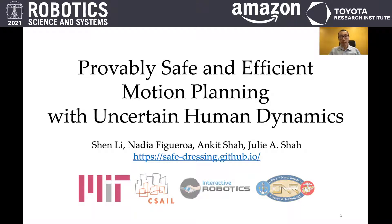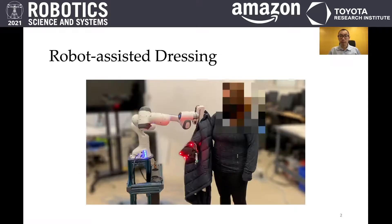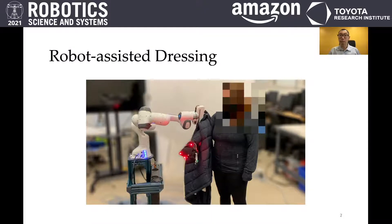Hello everyone, today I'm presenting Probably Safe and Efficient Motion Planning with Uncertain Human Dynamics. Consider the following scenario. A robot is shipped to a person at home to assist the person in dressing. The robot only has its default factory model of how humans could interact with it during task execution. In order to personalize the robot's assistance to meet the user's specific needs, the robot needs to collect on-policy interactive data with a human in the loop.